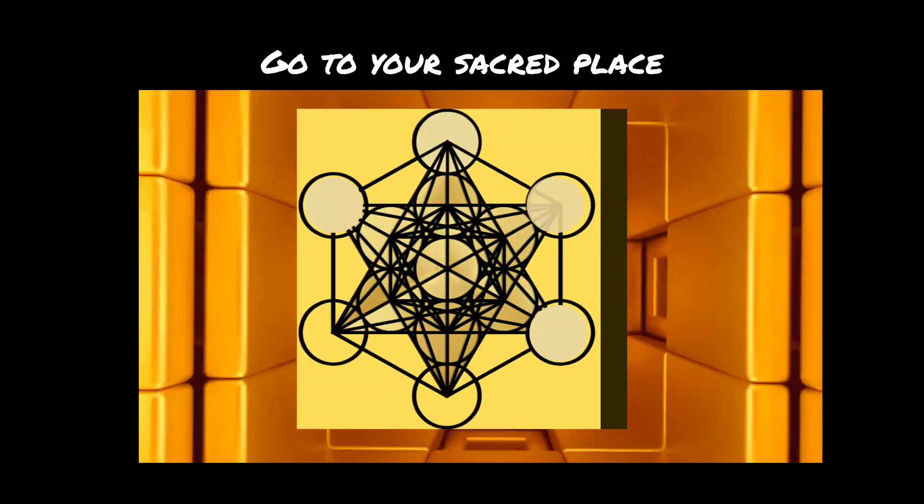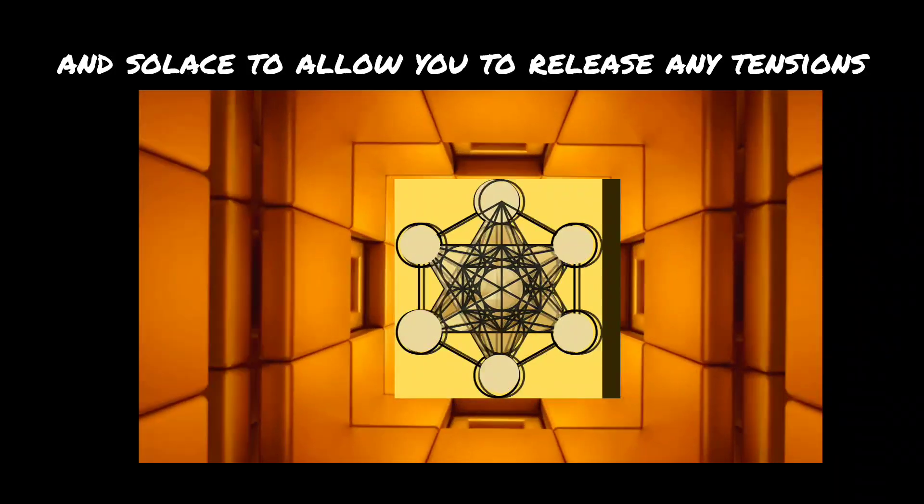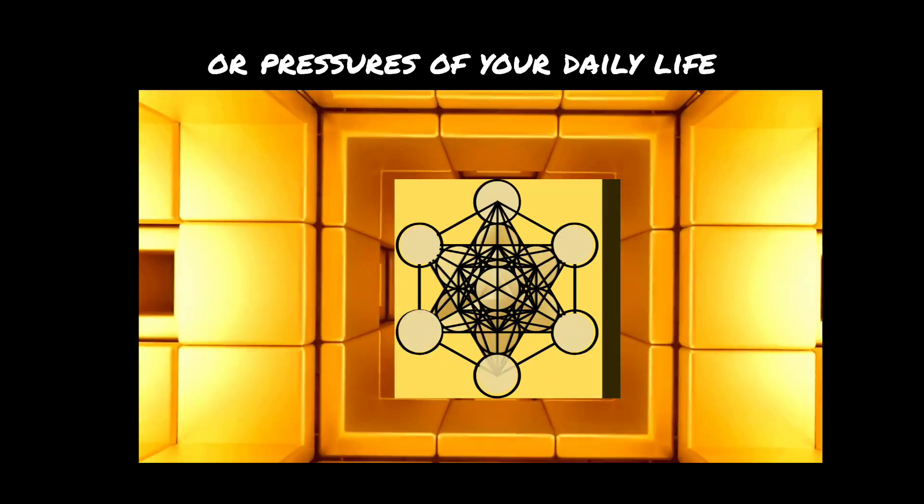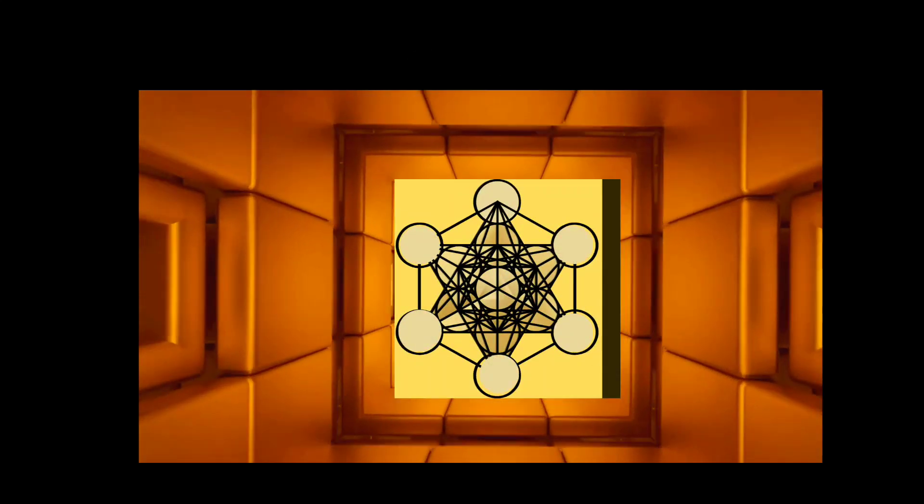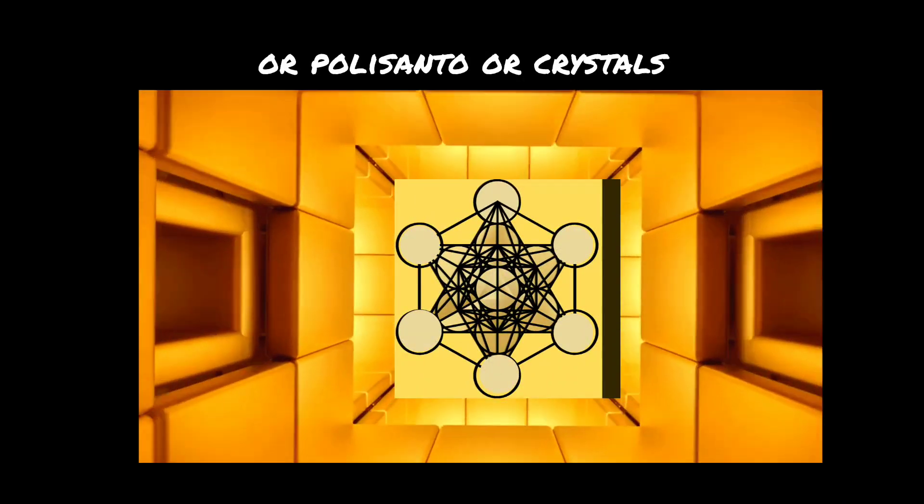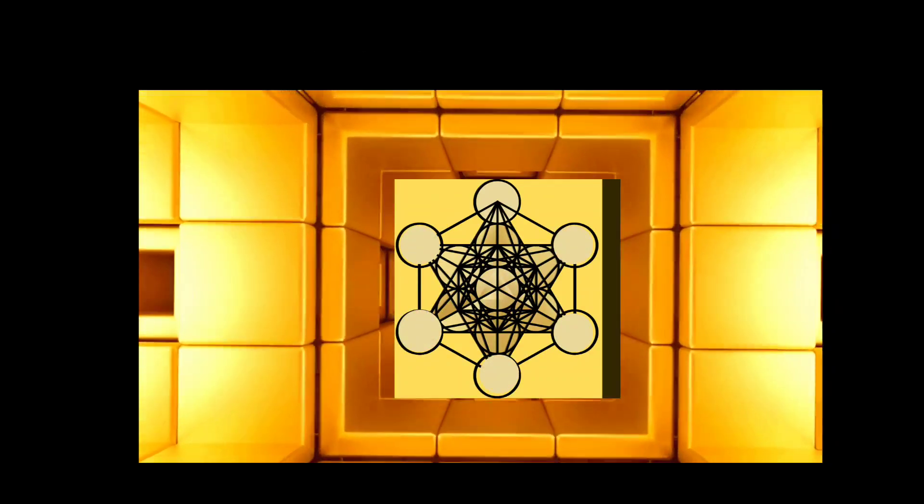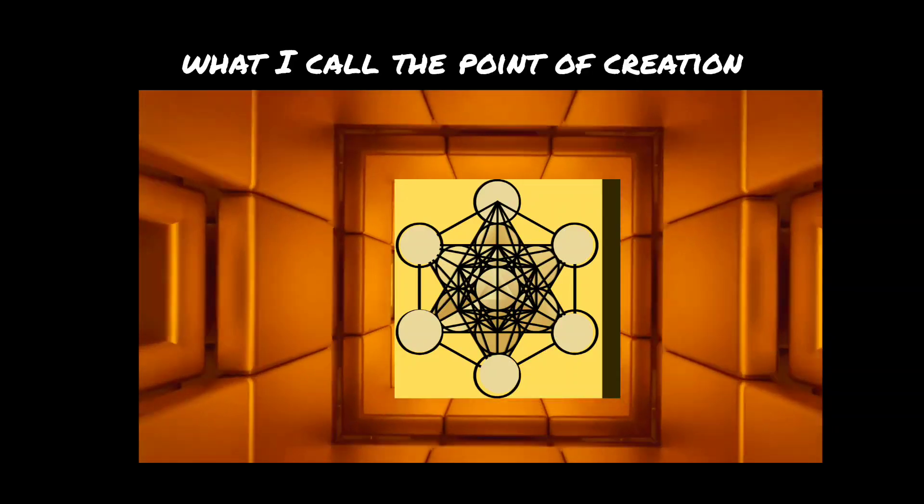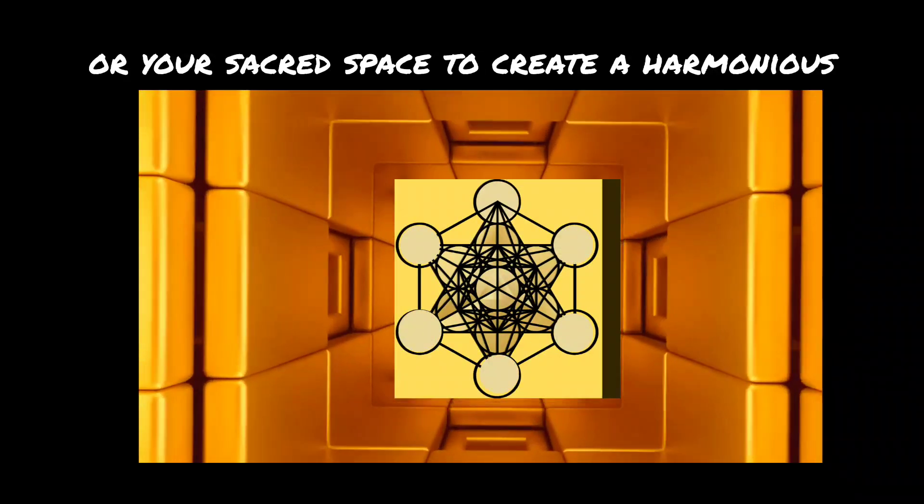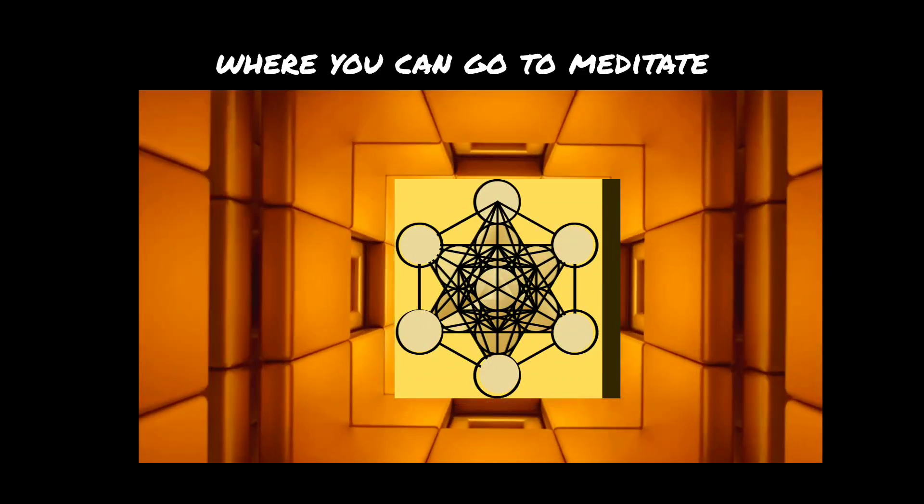Step one: go to your sacred place where you find peace and solace to allow you to release any tensions or pressures of your daily life. Step two: cleanse yourself and your space with sage or palo santo or crystals. You can even use lemon and salt if you have it. Step three: place your cube in what I call the point of creation or your sacred space to create a harmonious and uplifting space of your own where you can go to meditate and manifest what you desire into your life.